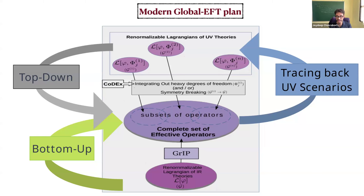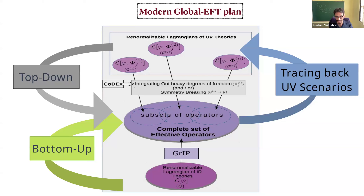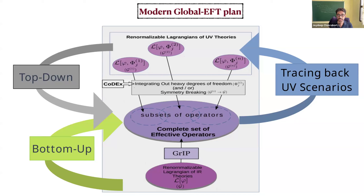The top-down approach helps here. Starting with effective operators, fitting experimental data, and then unfolding the operator — from minimal to non-minimal extensions — you can understand which models can explain the observed excess. You then need more experimental results to determine which among those models is best, in terms of precision and discriminating power.